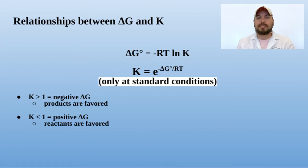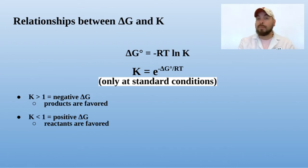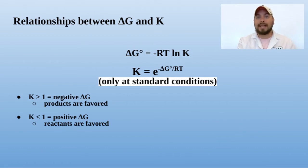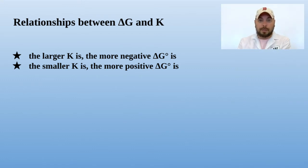The reason for that is because the natural log of anything greater than one is positive, and the natural log of anything less than one is negative. With natural log especially, the natural log of one is equal to zero, so one is equal to our tipping point. So at standard conditions, if delta G is positive, it's because our K value is less than one, and if our delta G is negative, it's because our K value is greater than one. The bigger the K value is greater than one, the more negative the delta G value becomes, and the smaller the K value becomes, the more positive the delta G value becomes.